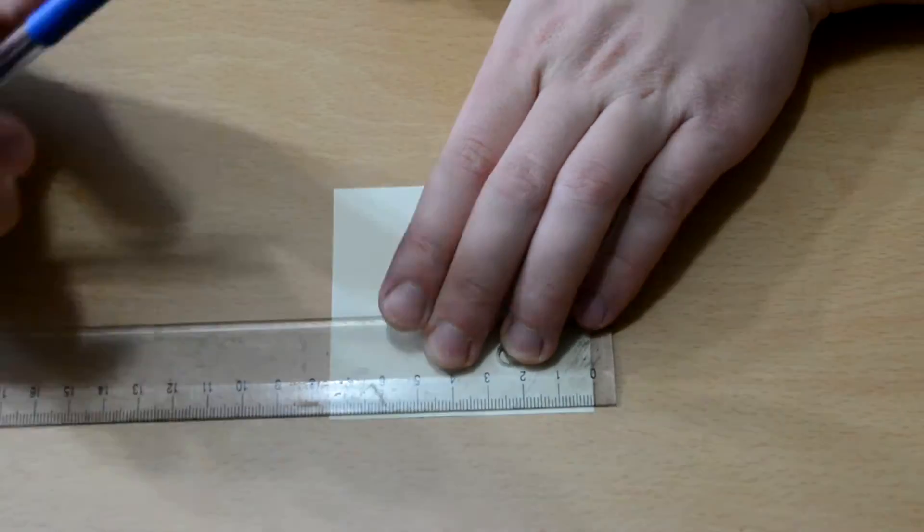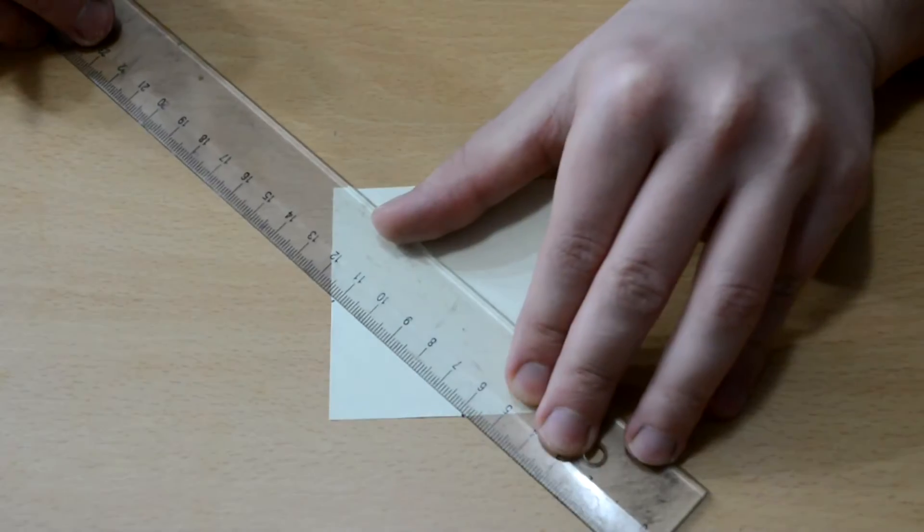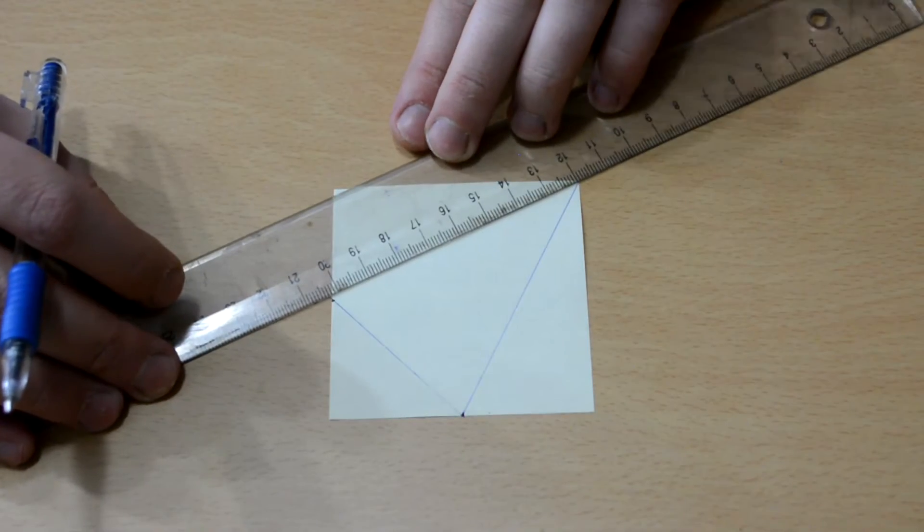You can use a ruler to mark the halfway point across the top and down the side. Then join up the dots and draw lines down to the bottom corner like this.